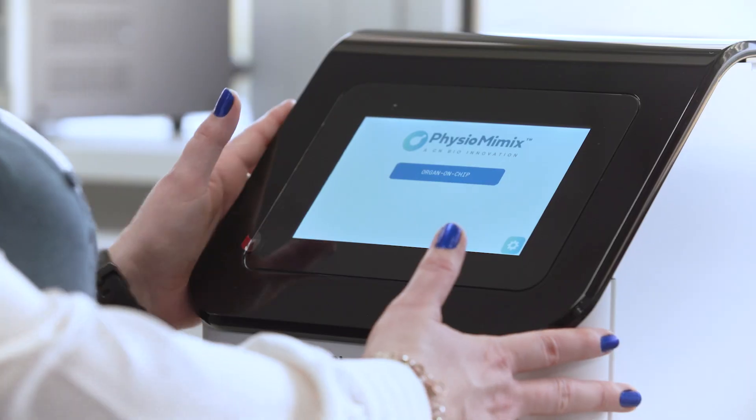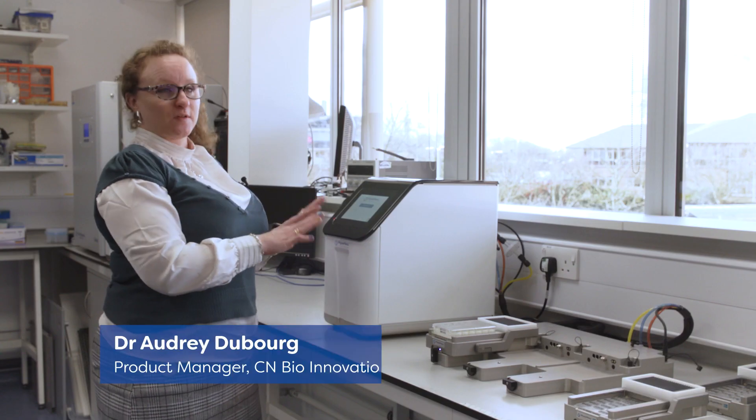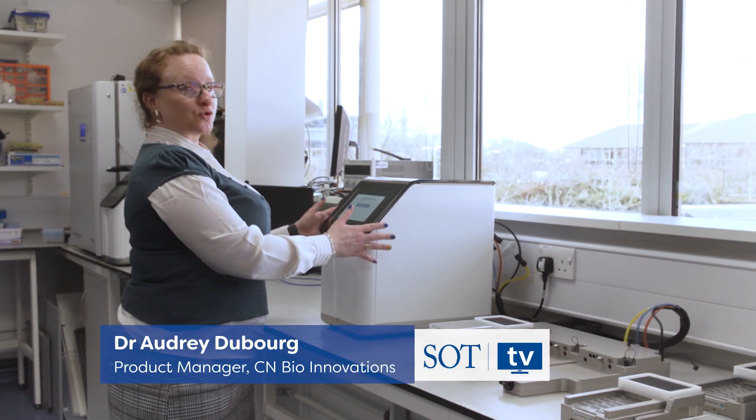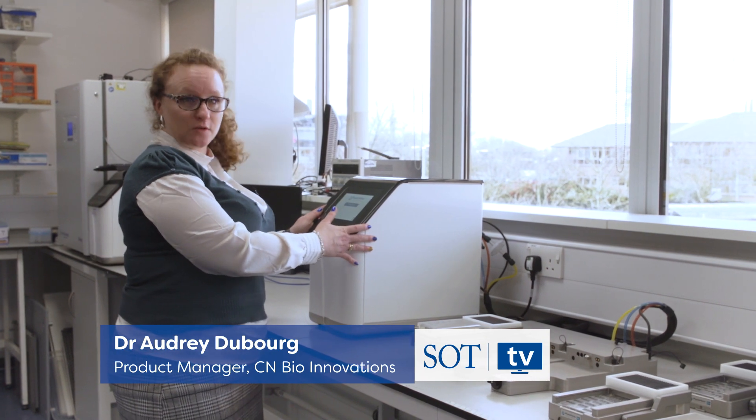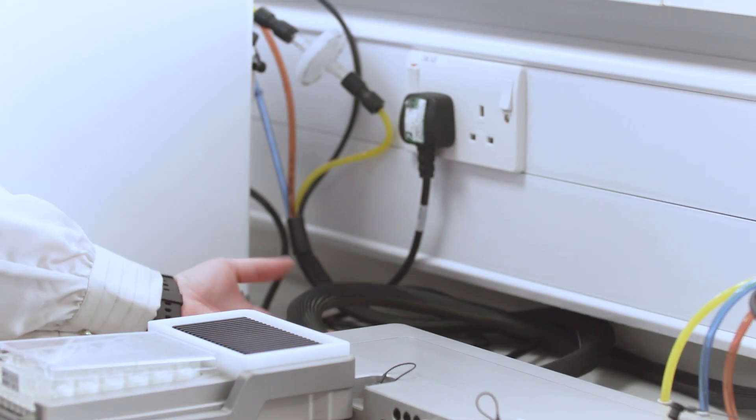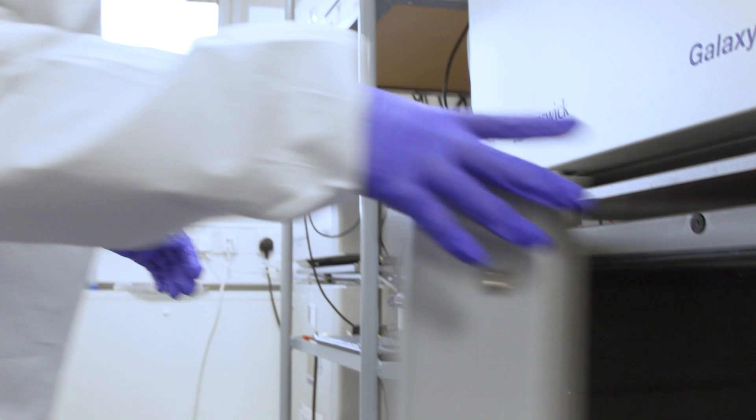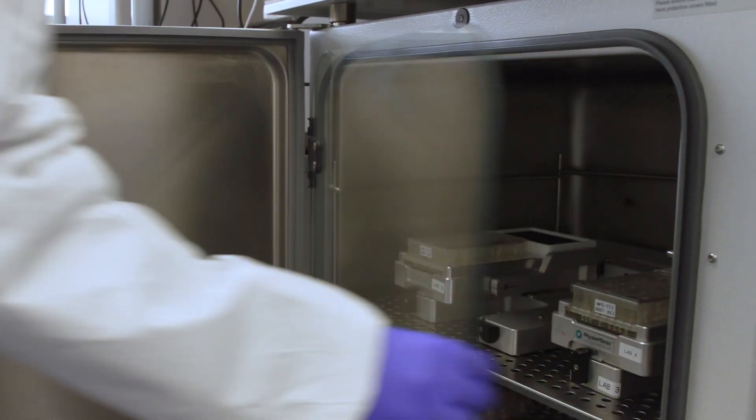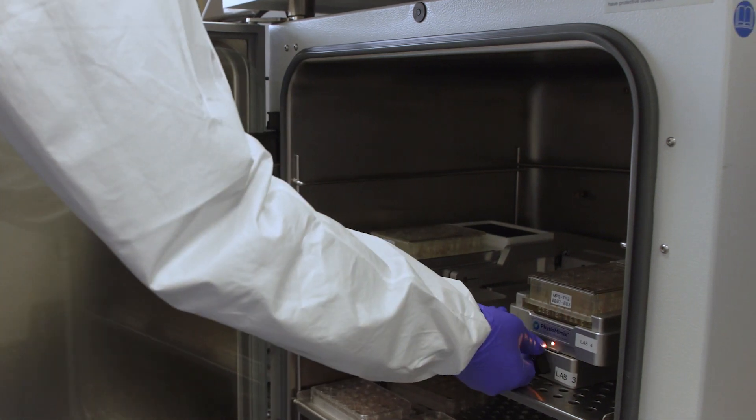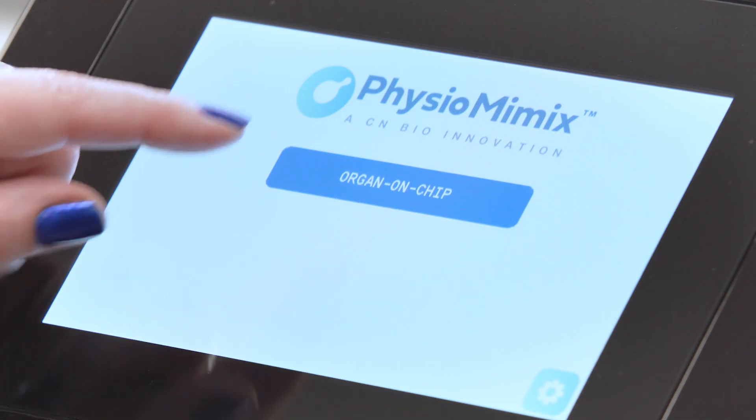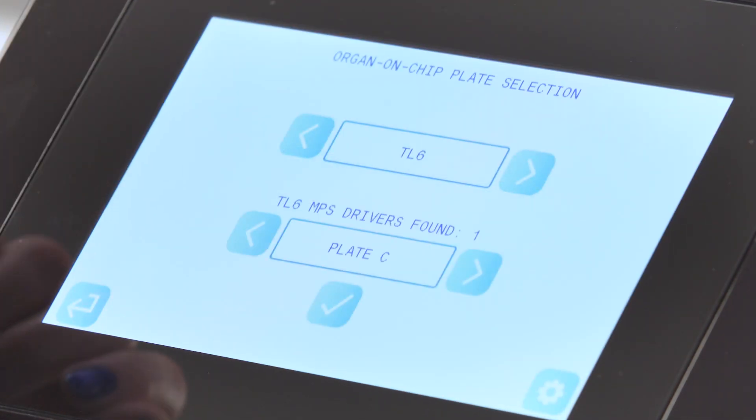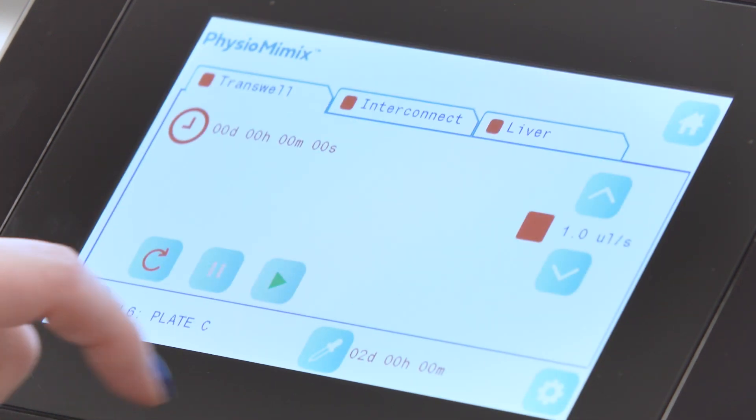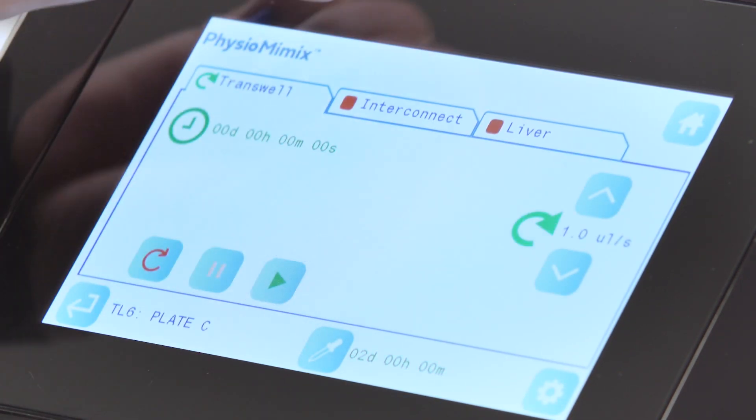This is the Physiomimics organ on chip system. The system is comprised of a controller that sits outside of the incubator which is connected inside of the incubator to a docking station. That docking station can host three drivers on which the plates are connected as well. To set up your experiment just simply select the plate you want and then press play on the program you want.